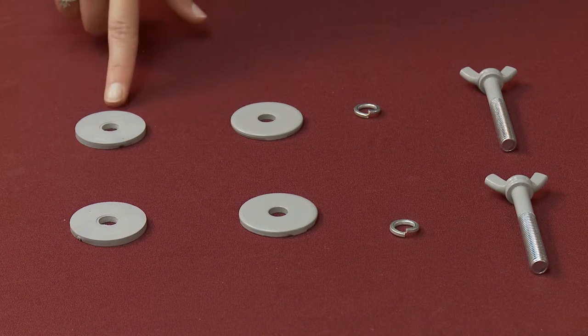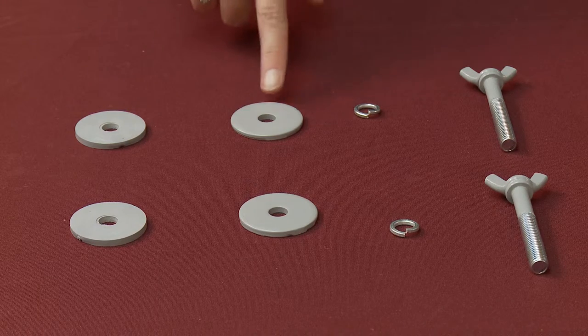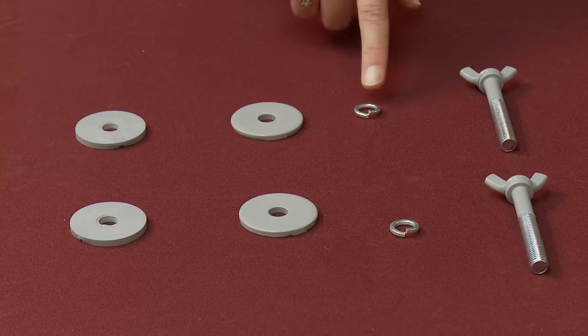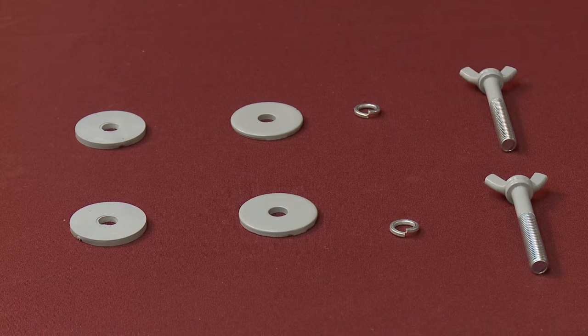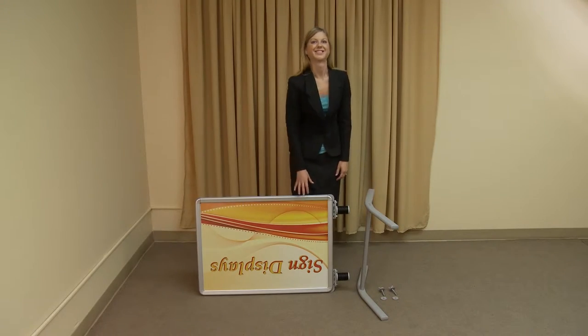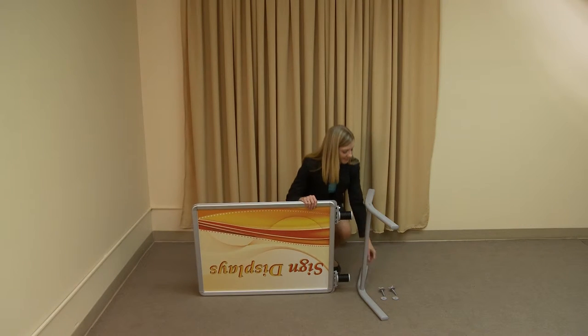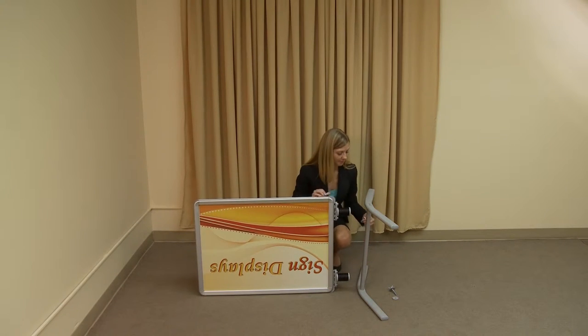The hardware provided to attach the base includes two bushings, two large washers, two locking washers, and two wing bolts. Begin assembly by standing the frame and the base on their sides. Align the top spring with the screw hole located on the crossbar of the base.